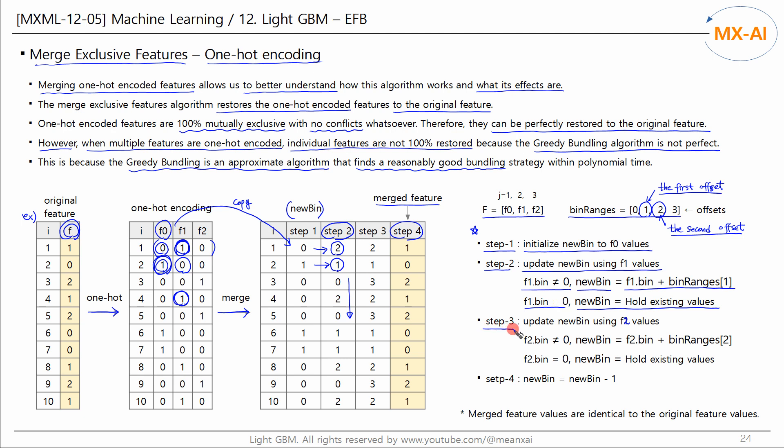Step 3 updates new bin using the values of F2. As in step 2, if the value of F2 is non-zero, update new bin by adding the second offset to this value. For the third data point, it is updated from 0 to 3.